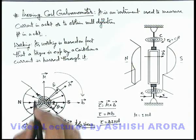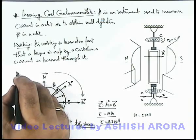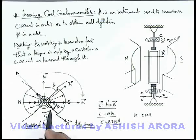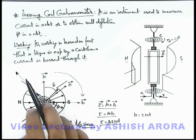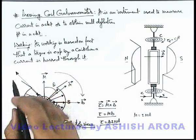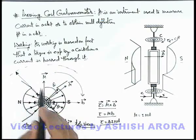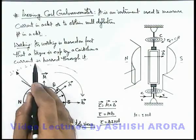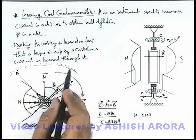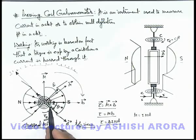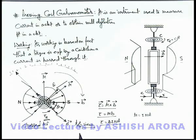Now if a needle is connected to this coil, we can see that based on the amount of current passing through the coil, the needle will be deflected, which can be placed on a printed scale on which we can calibrate it for the measurement of current. This is the way the galvanometer works. Let's mathematically analyze some coefficients related to the galvanometer.